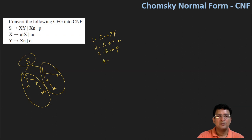Production 4 is X produces small m and capital X. Production 5 is X produces small m. Production 6 is Y produces X small n, and production 7 is Y produces small o.